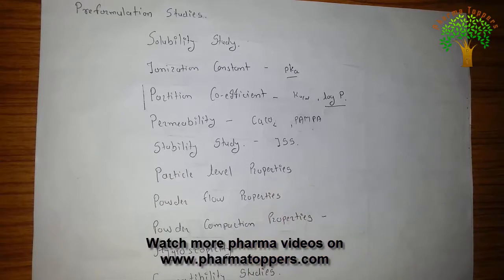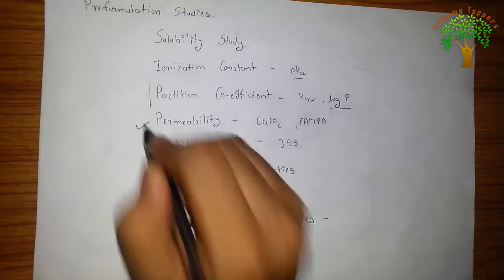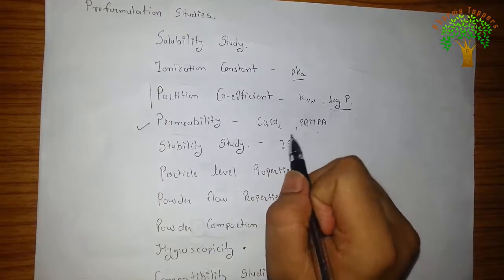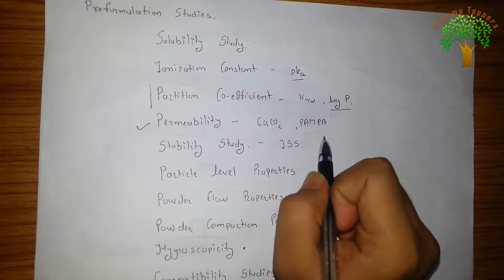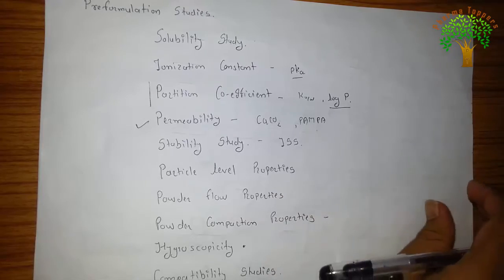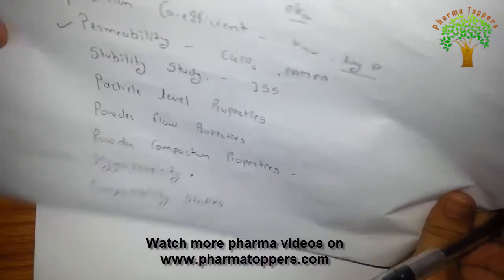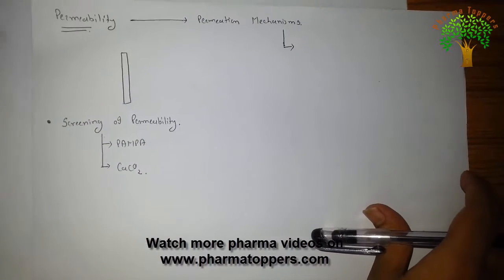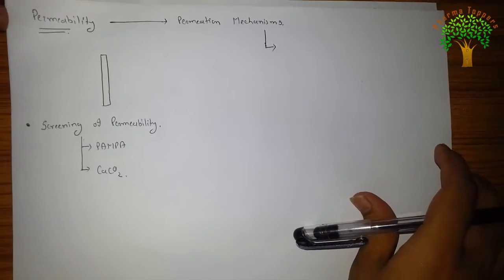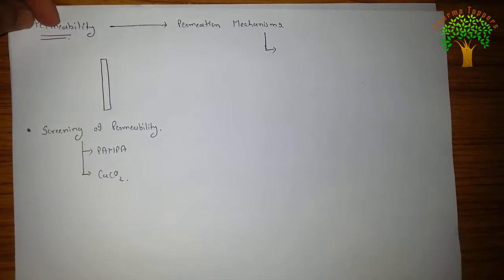Welcome to Pharmatopos friends. Today I am going to cover preformulation studies, the permeability, which I have told you is mainly the CACO-2 cell line and the PAMPA membrane. First of all, I am going to tell you what is permeability, and then I will be telling you what are the mechanisms of permeation and then the screening of permeability.